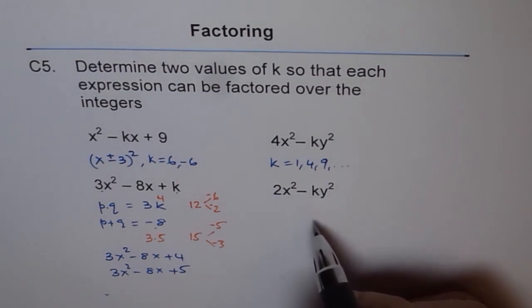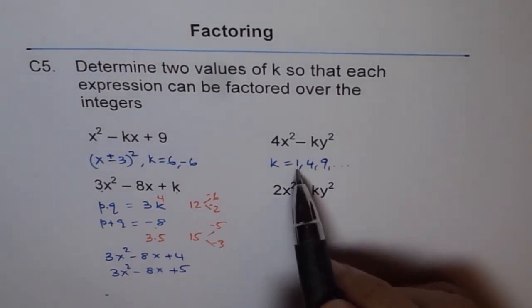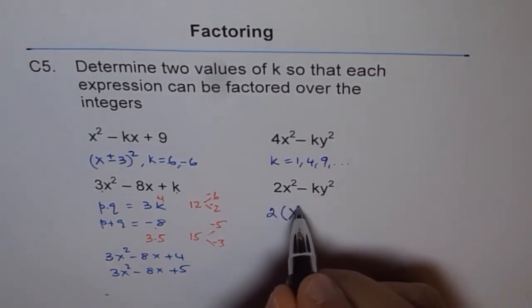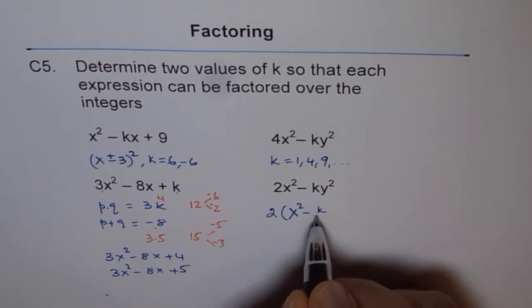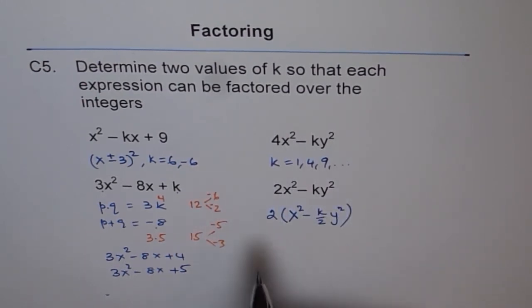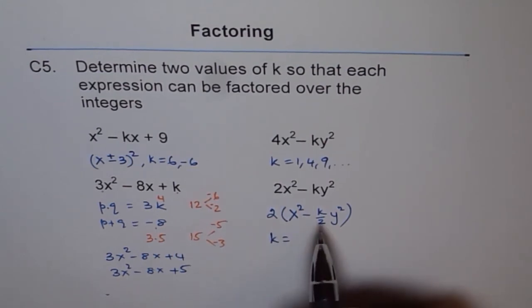To factor this, what should we do? What we can do is, then k could be, like we can factor this 2 out. And we get what? We get x square minus k divided by 2y square. That means k value should be now equals to perfect square times 2.